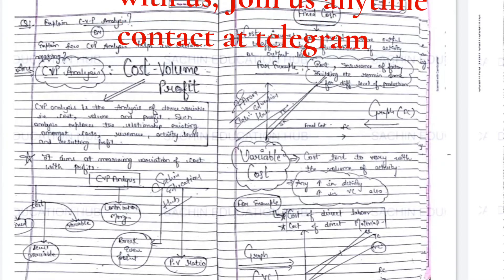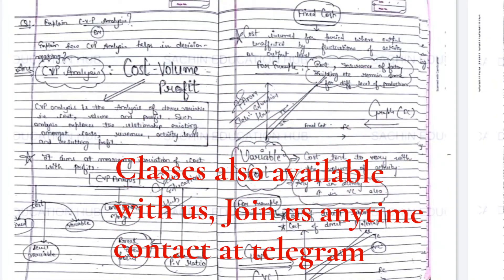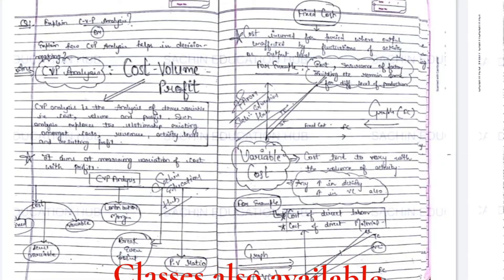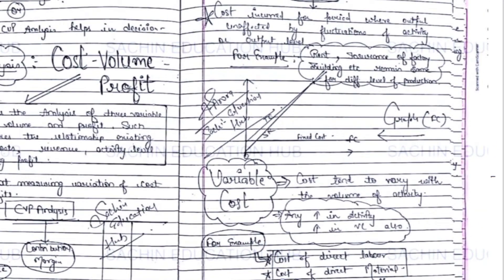Now our question is how CVP analysis is helpful. But first, cost is of three types: fixed cost, semi-variable cost, and variable cost. Fixed cost is the cost that does not change in a year or with a change in output. Variable cost is the cost that changes with the change in output — for example, if I am producing 10 units and now I produce 11 units, the additional cost for that one unit is variable cost.